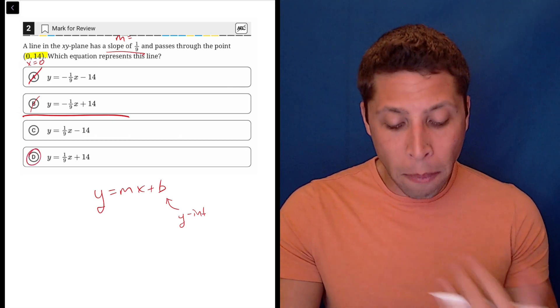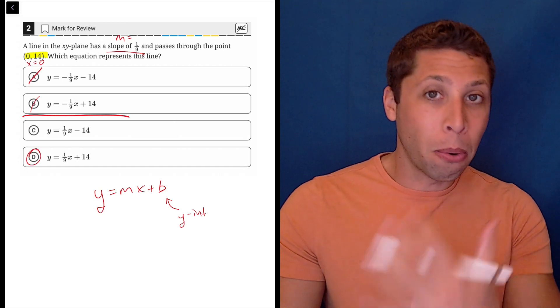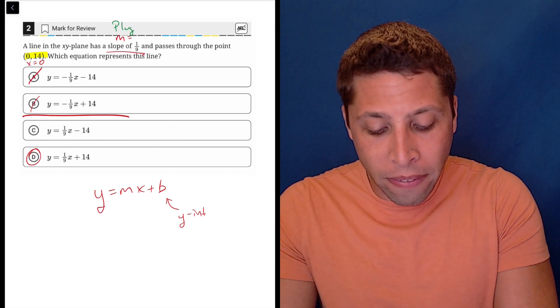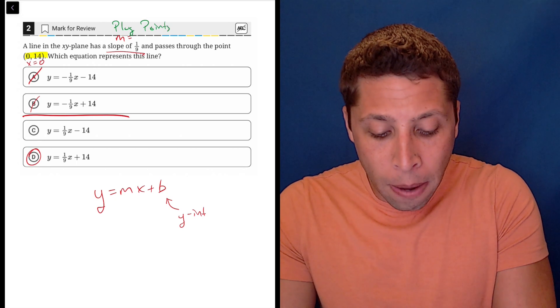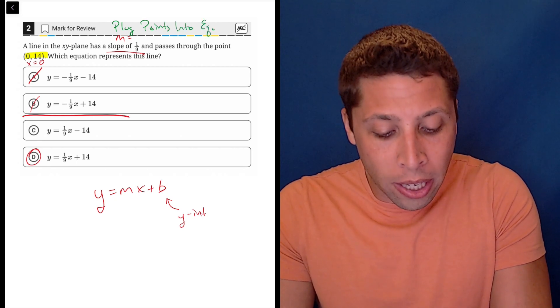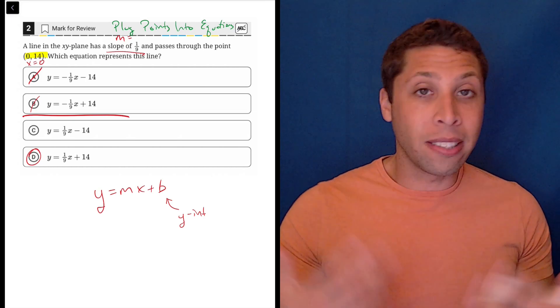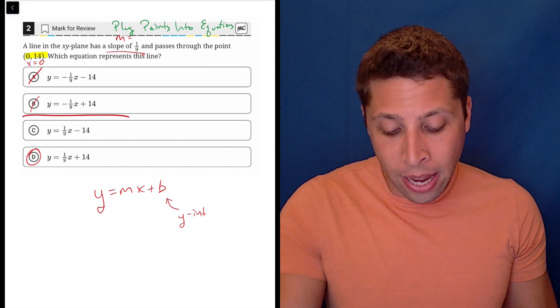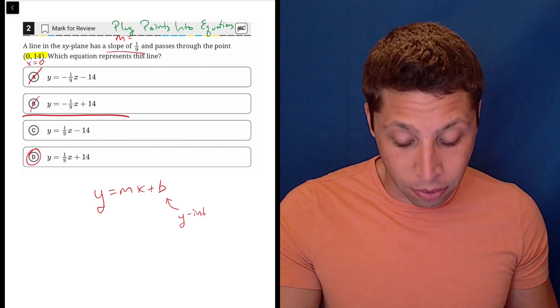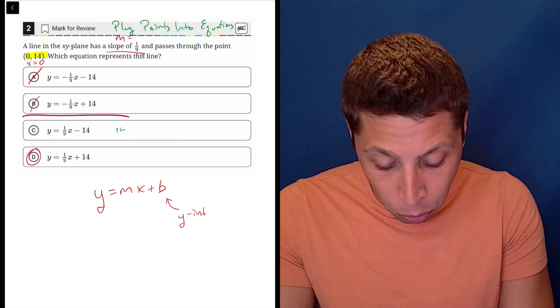Now, if you were a little unsure, remember any time they give you points and equations on the SAT, we can use my favorite strategy: plug points into equations. So if for some reason you were confused about the (0, 14), just plug it in, and we'll see that only choice D is going to give us a valid result. If we plug 14 in